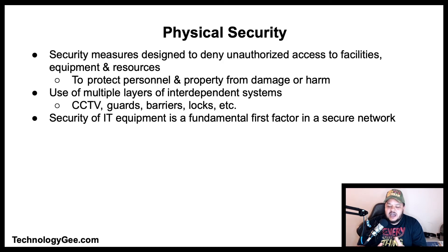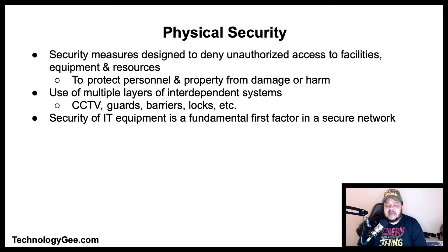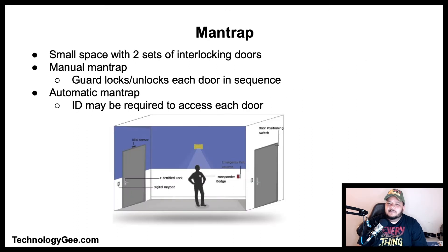Physical security describes security measures that are designed to deny unauthorized access to facilities, equipment, and resources, and to protect personnel and property from damage or harm. Physical security involves the use of multiple layers of interdependent systems that can include CCTV surveillance, security guards, protective barriers, locks, access control, perimeter intrusion detection, deterrent systems, fire protection, and other systems designed to protect persons and property. Physical security of IT equipment is a fundamental factor in securing a network.